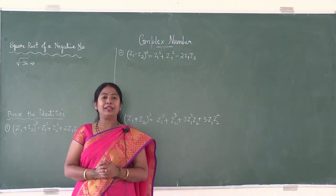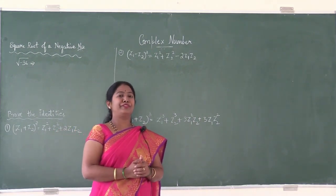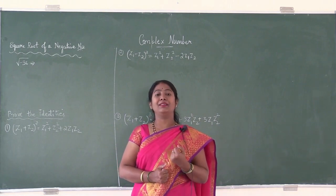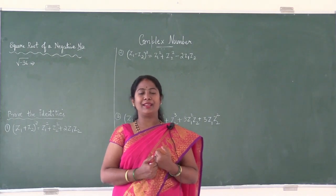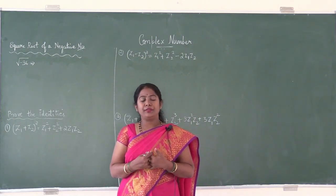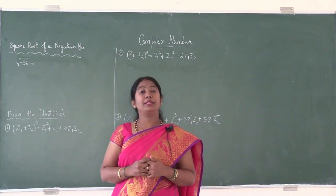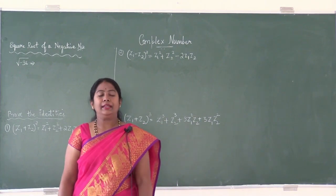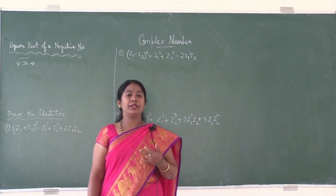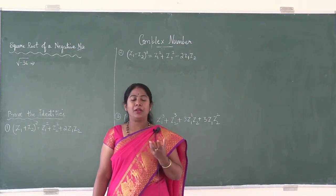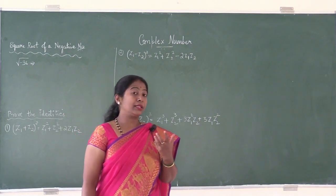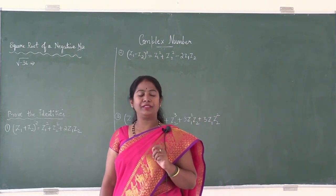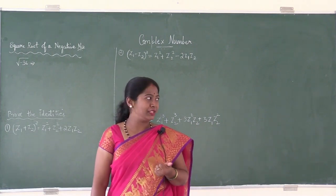Let me quickly summarize the previous class. Any number of the form x + i·y or a + i·b, that is the combination of a real number and an imaginary number together, is called a complex number. Imaginary 'i' stands for an imaginary number. The conjugate of a complex number z = a + i·b is denoted by z-bar and is given by a − i·b; the sign changes. The modulus of a complex number, mod z, is defined as the square root of the sum of squares of the real part and the imaginary part.